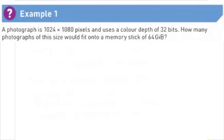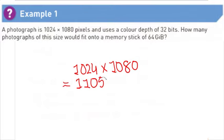Now, let's do some examples. This is example number 1, which says a photograph is 1024 by 1080 pixels and uses a color depth of 32 bits. How many photographs at this size would fit onto a memory stick of 64GB? First, we are going to multiply the number of pixels in vertical and horizontal directions to find the total number of pixels.